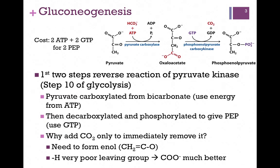It actually takes us two steps to do this because of the chemistry involved. We're going to start with a molecule of pyruvate and eventually convert that to phosphoenol pyruvate. In the first step, we're going to convert pyruvate to oxaloacetate. We're going to add a carboxyl group at that end carbon, and that's going to come from bicarbonate. The energy to form that bond is going to come from ATP hydrolysis. So pyruvate carboxylase is a good example of a ligase enzyme.